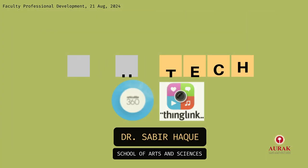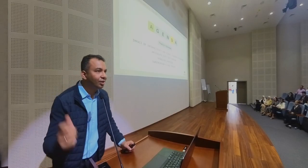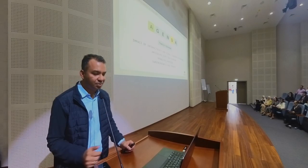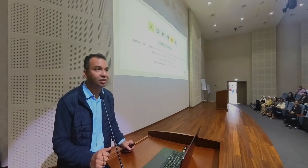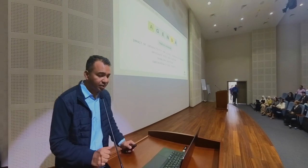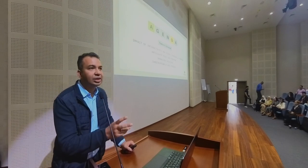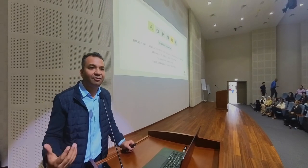I'm going to cover four things. First, I'll talk about interactivity. We heard the word engagement a lot in the first session — people want their lectures to be engaging. I'm going to add interactivity to that because that's how you can make it really engaging. I'll also talk about visual learning and give you an overview of two platforms I've used in the last year and what I've learned from them.